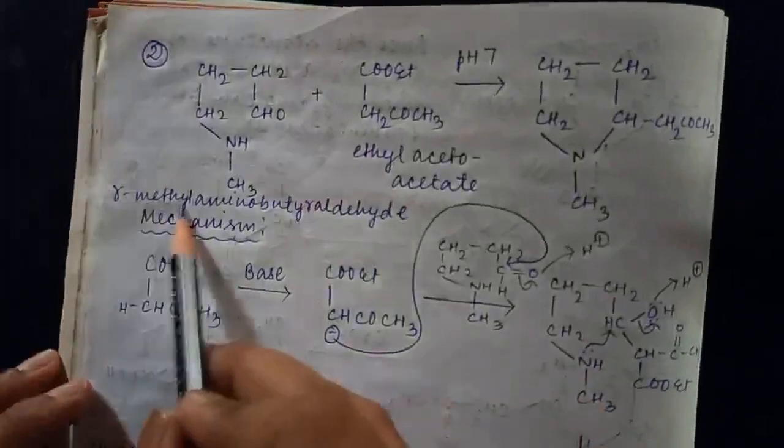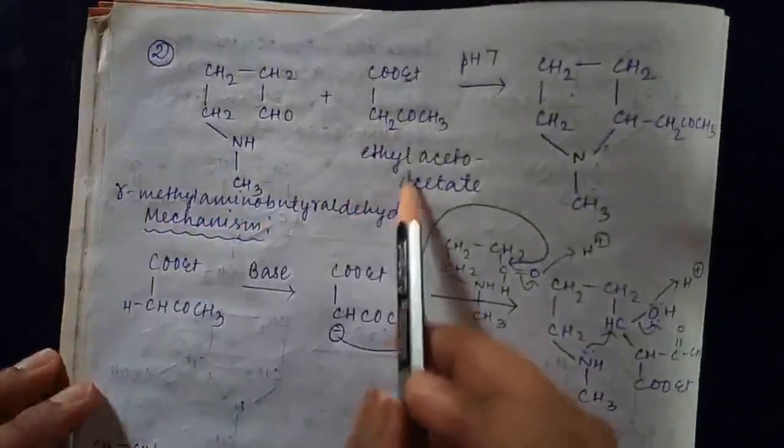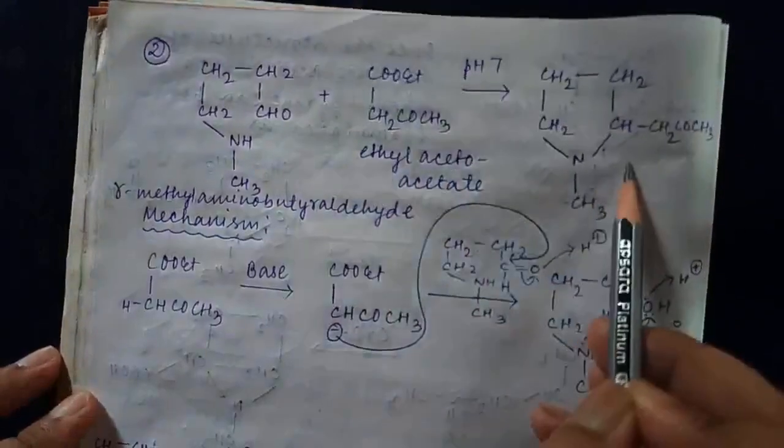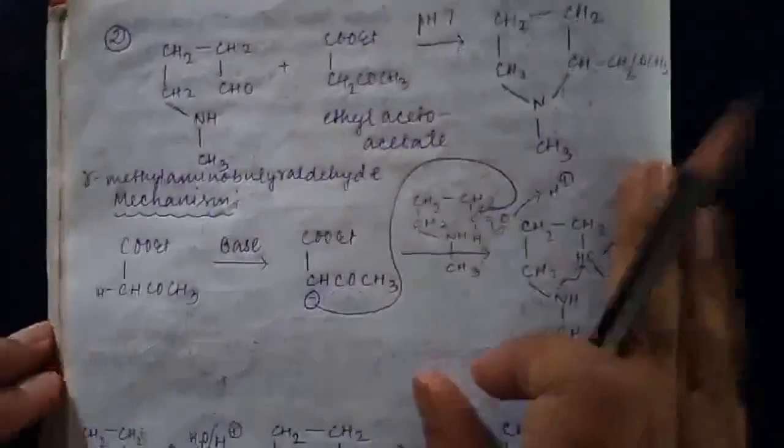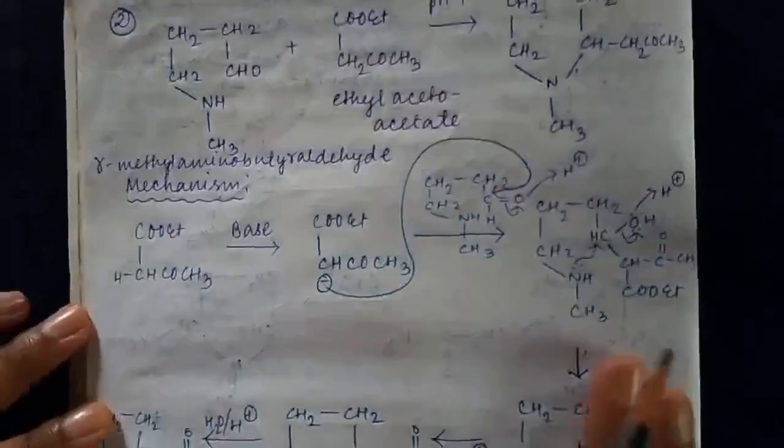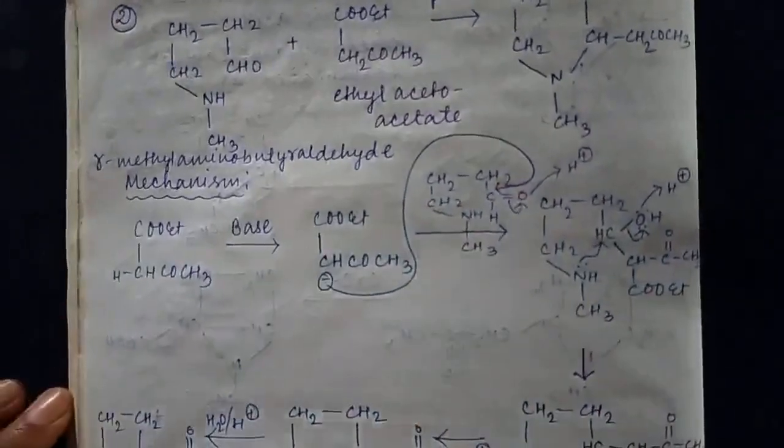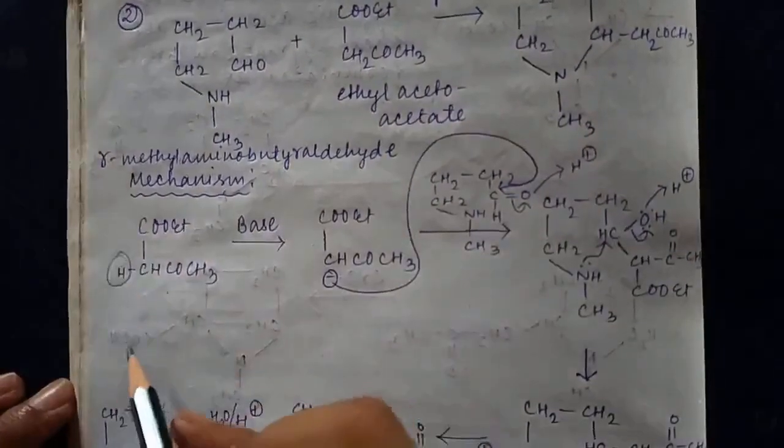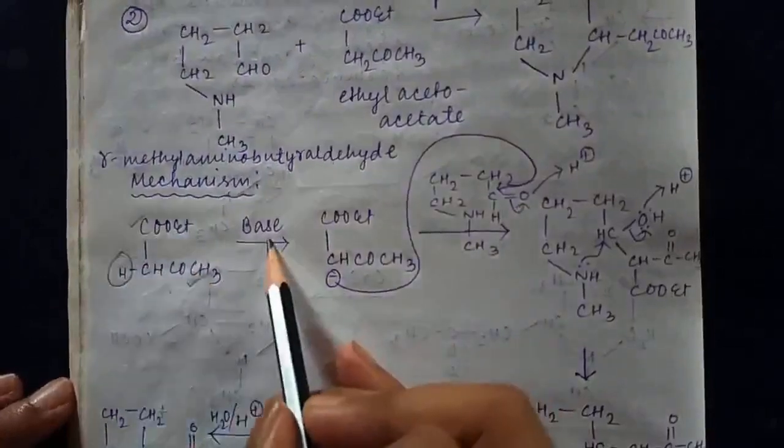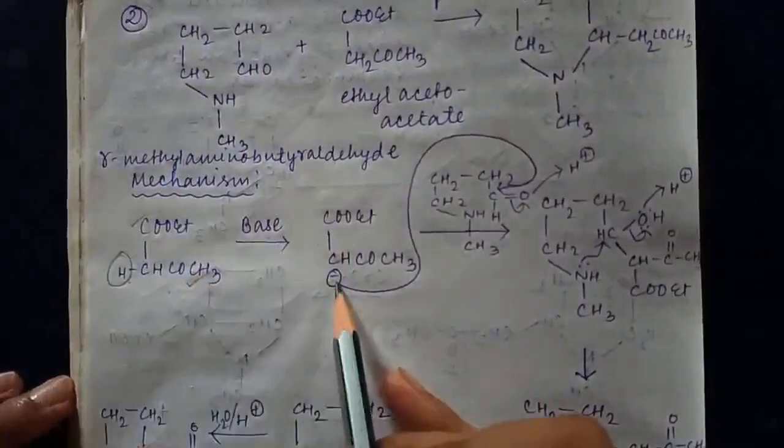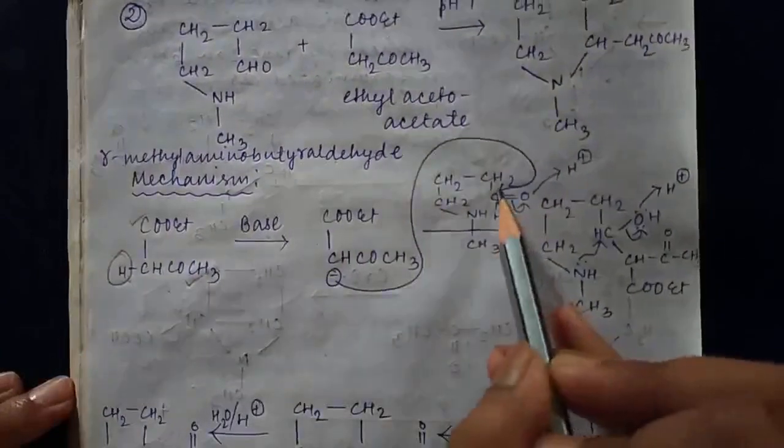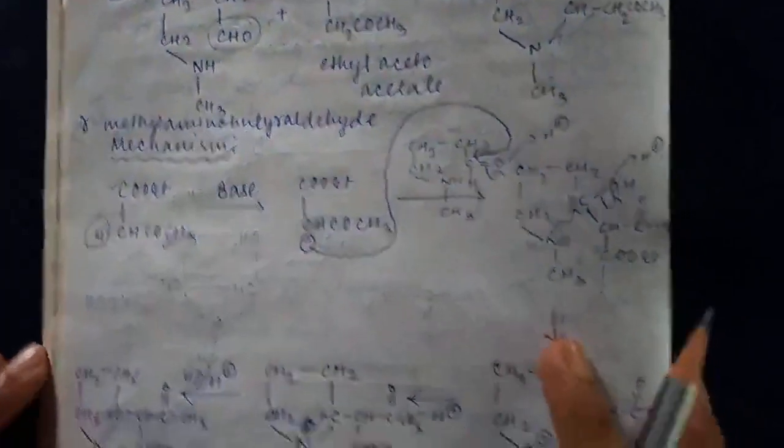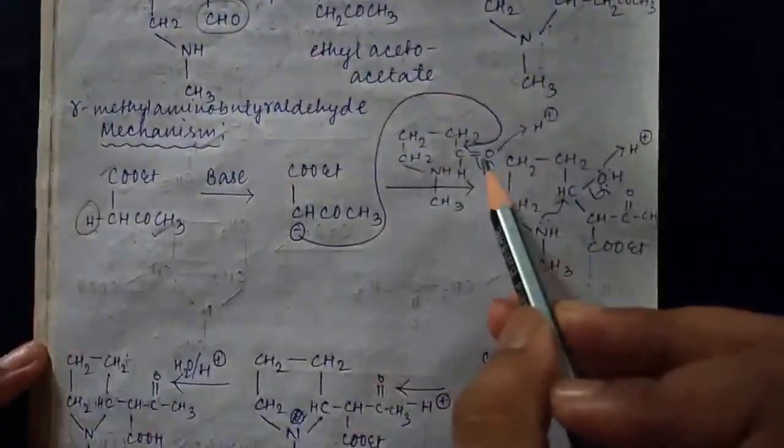In the second synthesis, we treat gamma-methylaminobutyraldehyde with ethyl acetoacetate at pH 7, and hygrine structure is formed. First, ethyl acetoacetate is written. The hydrogens are acidic because flanked by carbonyl groups. When base is treated, an anion is formed. This attacks C double bond O, and H accepts. The resulting structure has OH.